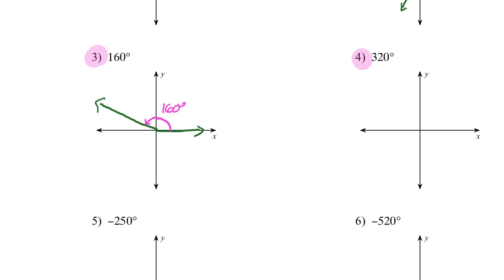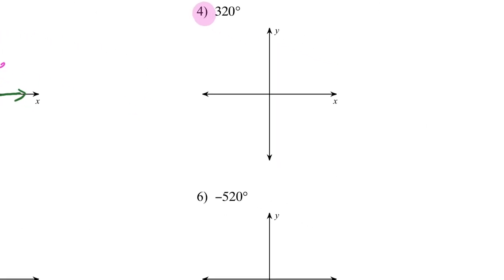For 320 degrees: again, initial side on the x-axis. Opening from there I get 90 degrees, then 180, 270, and 320 is about 50 more from 270. So it should be a little bit more than halfway, somewhere around here. That's my terminal side with the arrow — and that's 320 degrees.